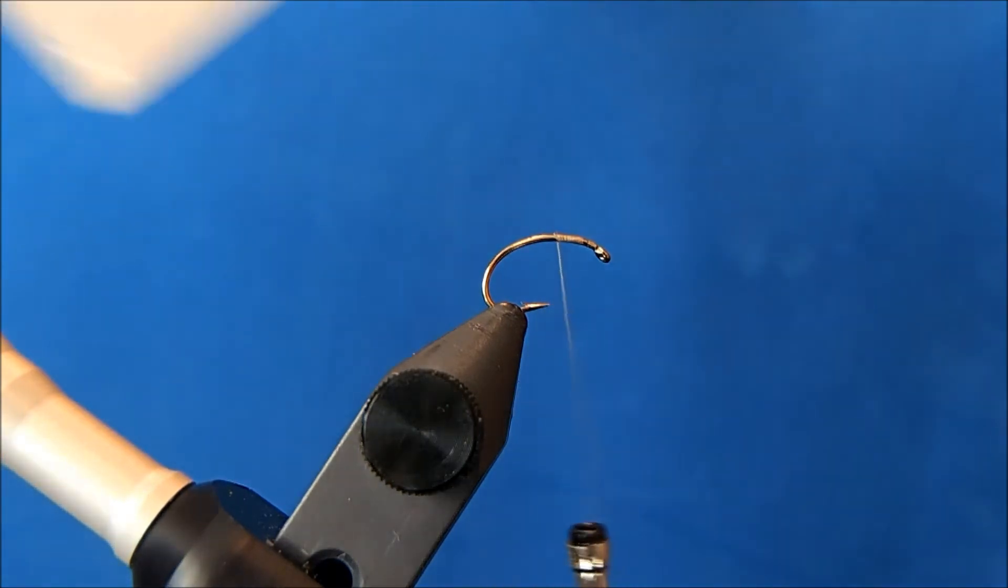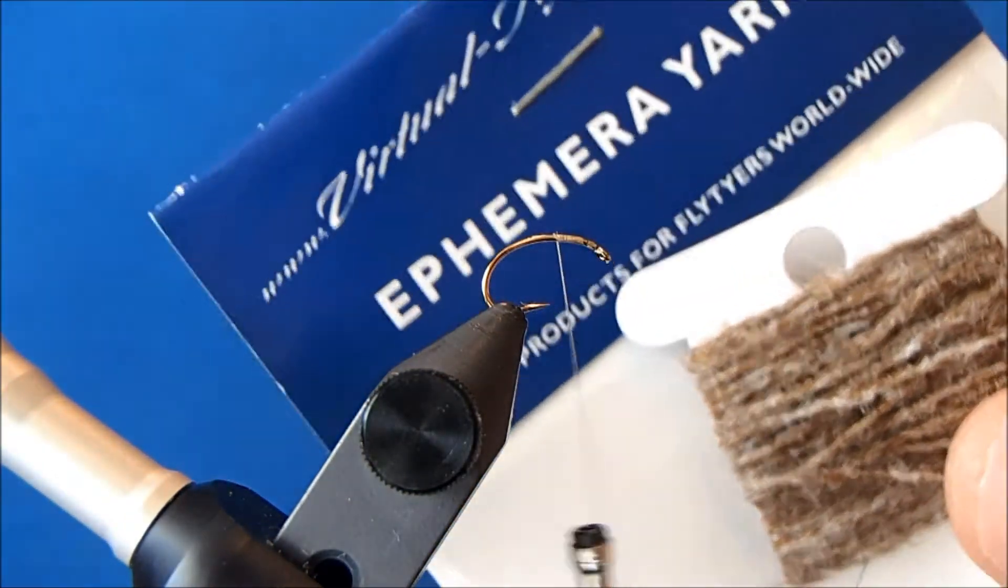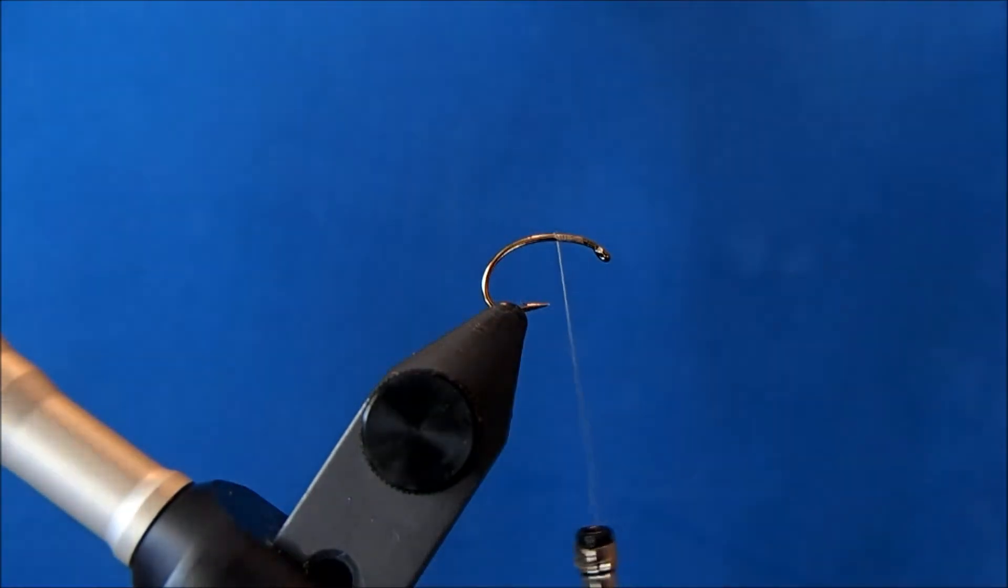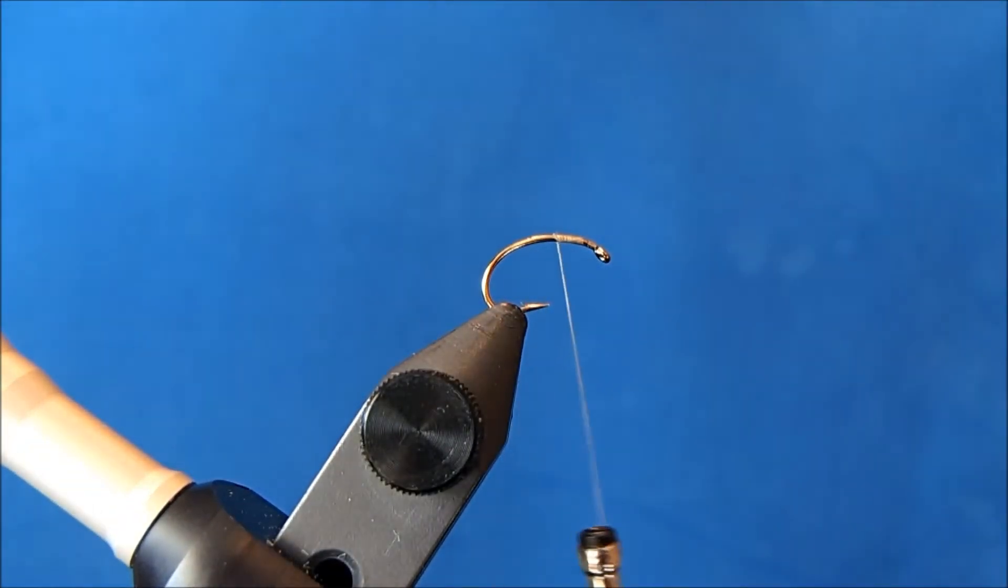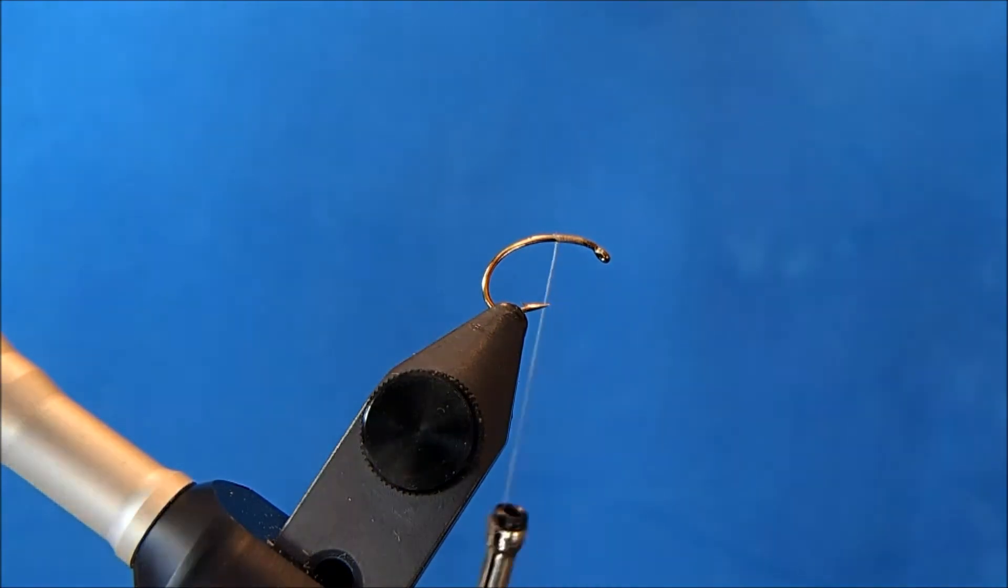The ephemera yarn is a cool product by Virtual Nymph, and it makes for some nice bodies. You can add some twists to this to make it even more segmented.